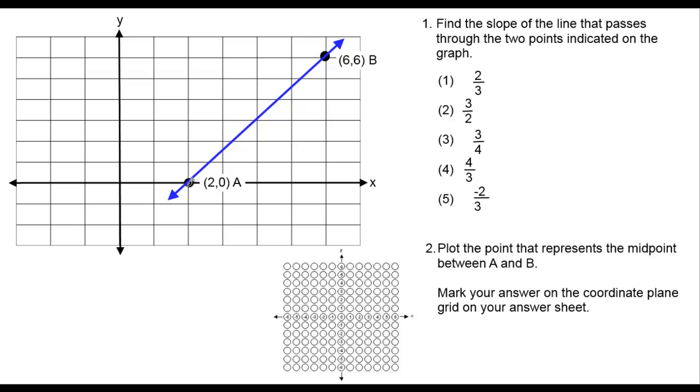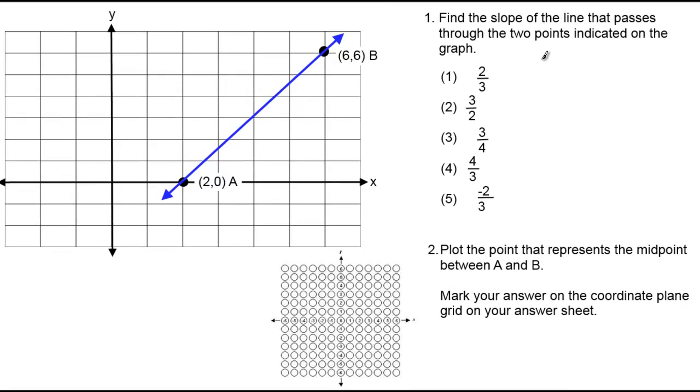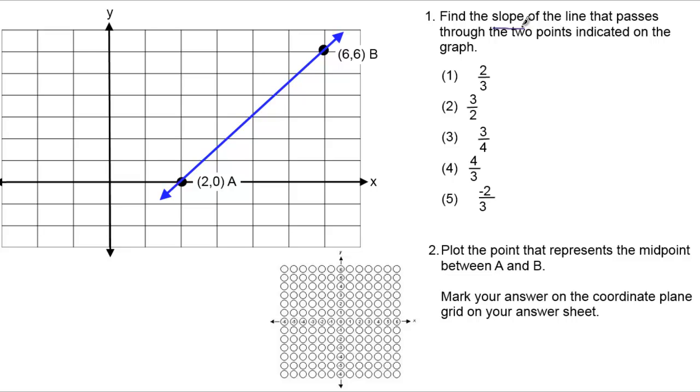For example, this one, where it's already graphed out here for you. You can just look at this graph and count the formula. Find the formula by counting. And the way you do that is all you need to do is remember that slope is rise over run.